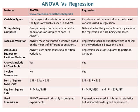Both ANOVA and regression use sums of squares to partition variation, and both analyses include an ANOVA table. There is no correlation in ANOVA, whereas there is correlation in regression. The sum of squares total and key sum of squares ratios of ANOVA and regression are given for comparison. ANOVA is used primarily in designed experiments, whereas regression is used in inferential statistics but validated via designed experiments.